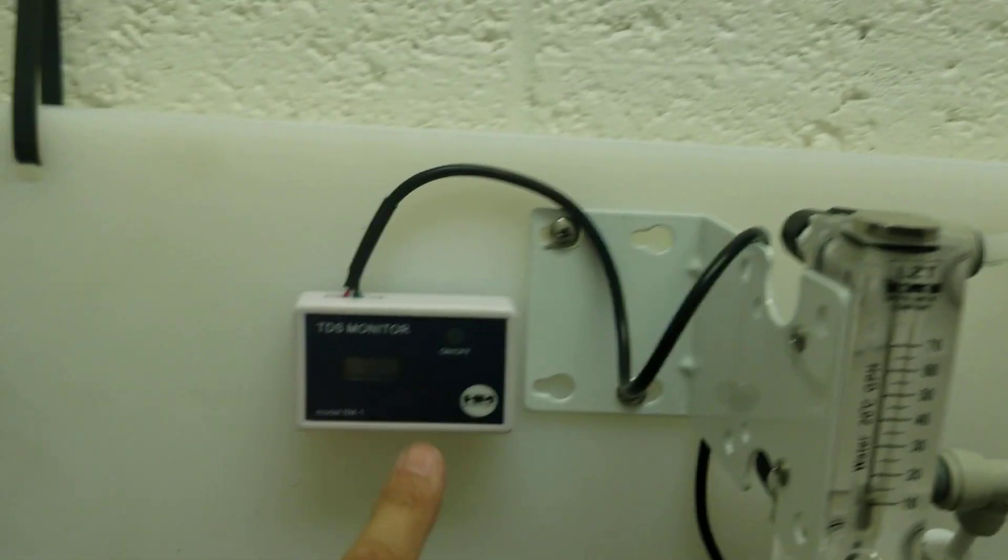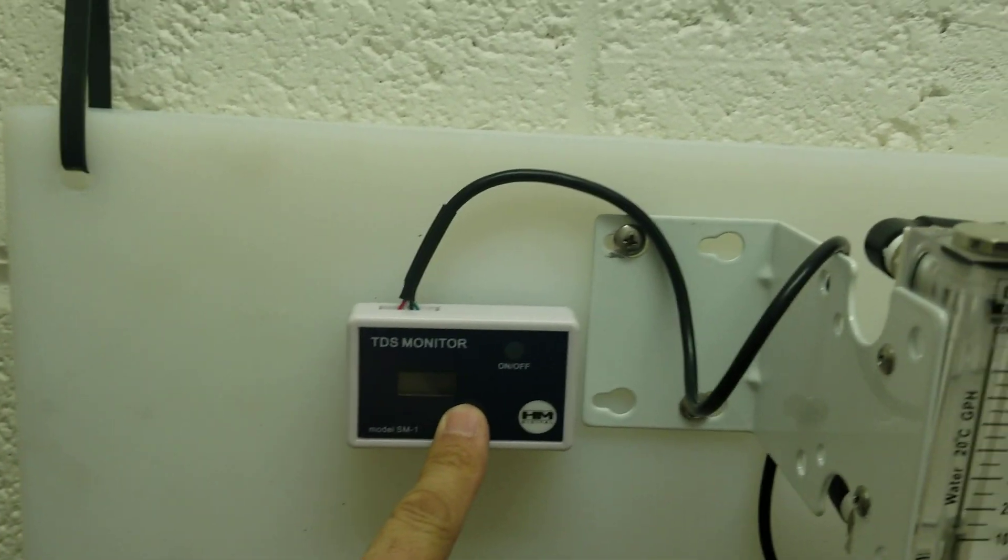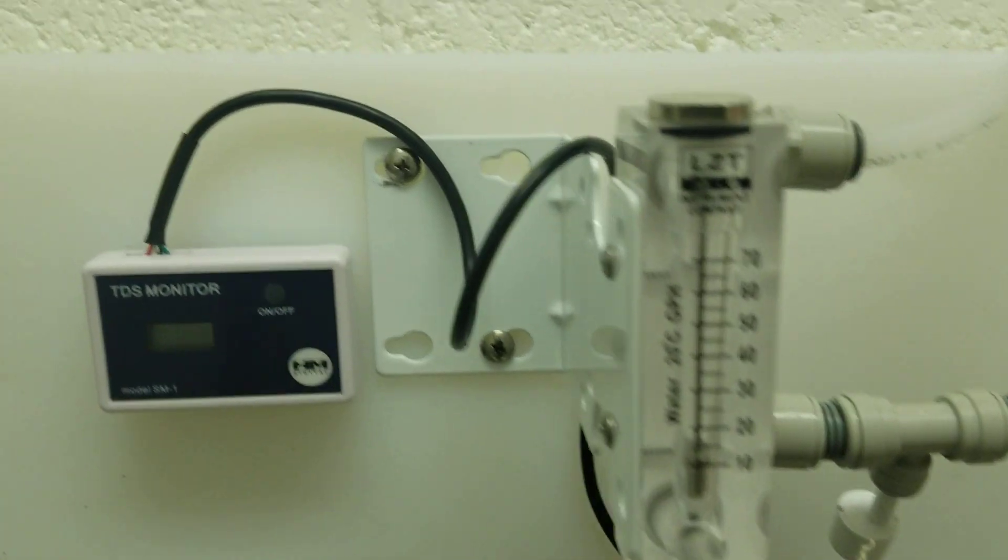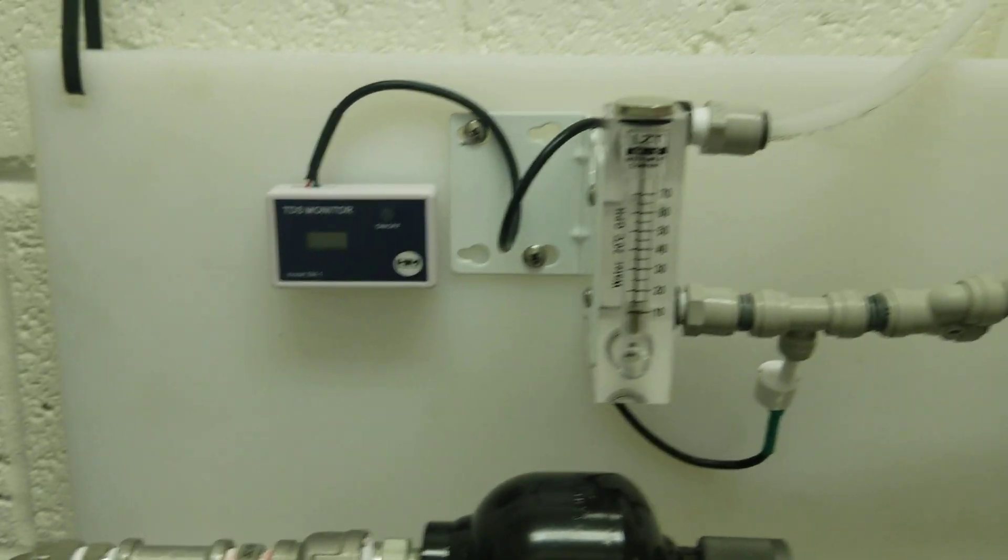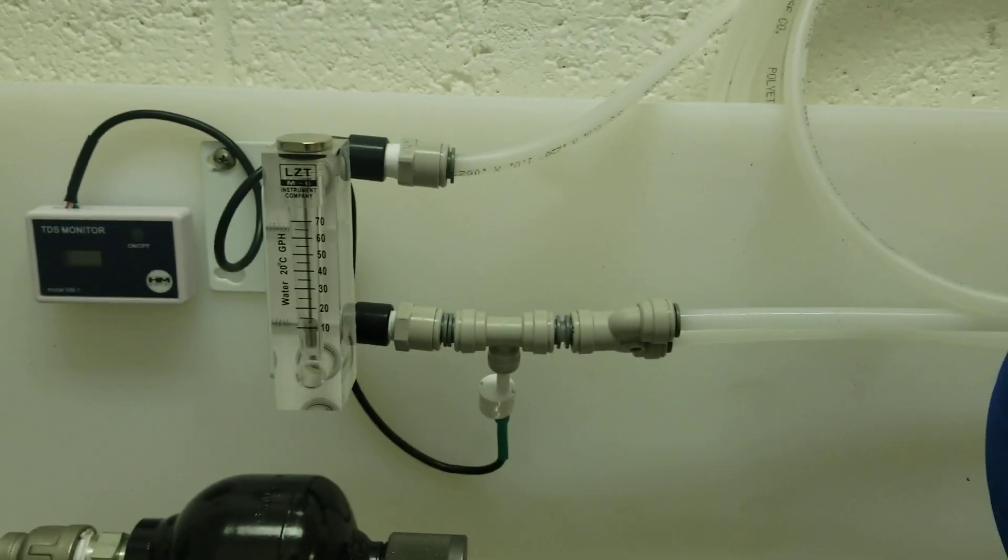This is the flow meter right next to the flow meter. We have a TDS real time TDS analyzer. So you don't need to sample the water. Just turn on the analyzer and take a real time reading of what's going on.